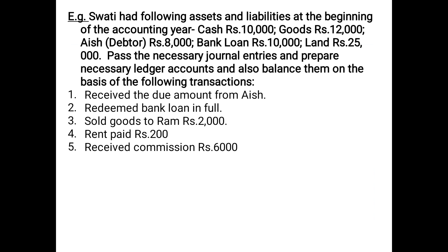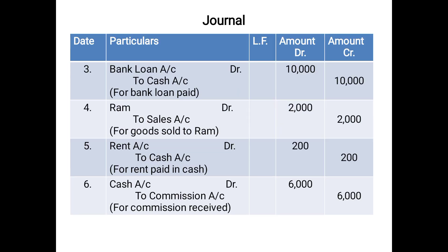The next transaction: redeemed bank loan in full — 'redeemed' means repaid. Bank Loan Account will be debited because it is a liability that carried a credit balance; now since we are repaying it, it will be closed with an opposite debit entry. Since cash is going out, the entry will be: Bank Loan Account debited, To Cash Account 10,000.